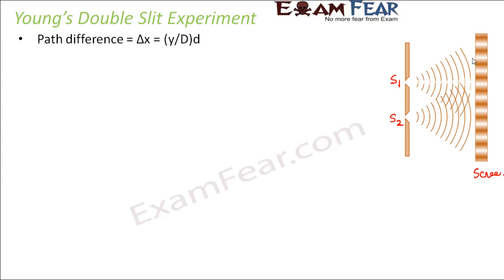When we talk about Young's double slit experiment, the key thing we discuss is path difference. The light from both sources reaches the screen. Consider any point P on the screen — the light wave from S1 travels path S1P, and the light wave from S2 travels path S2P.